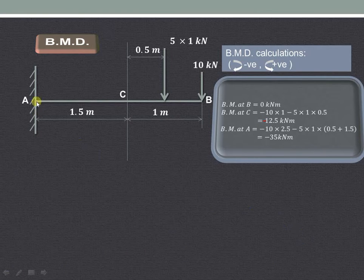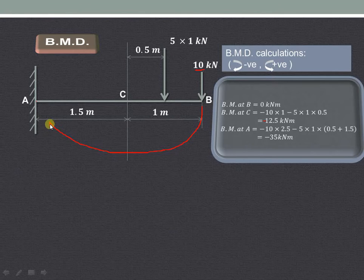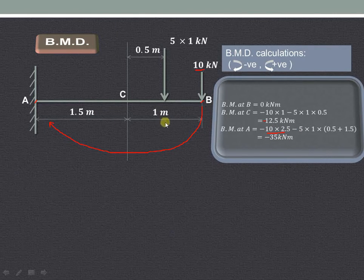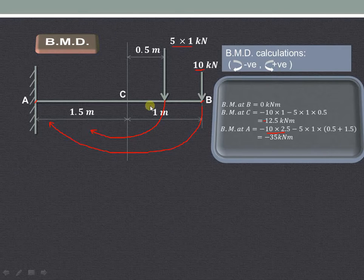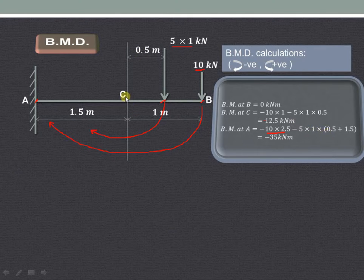For the bending moment at point A, we consider all forces acting on the right-hand side of A. The 10 kN force produces a clockwise moment, and the perpendicular distance between B and A is 2.5 meters — that is our first term. Then the 5 into 1 point load also produces a clockwise moment, with a perpendicular distance of 0.5 plus 1.5, which equals 2 meters.